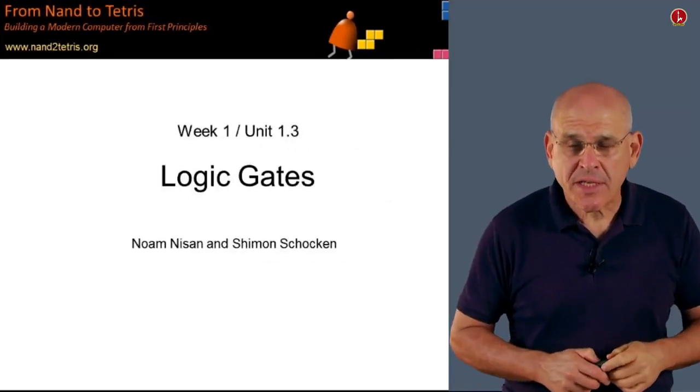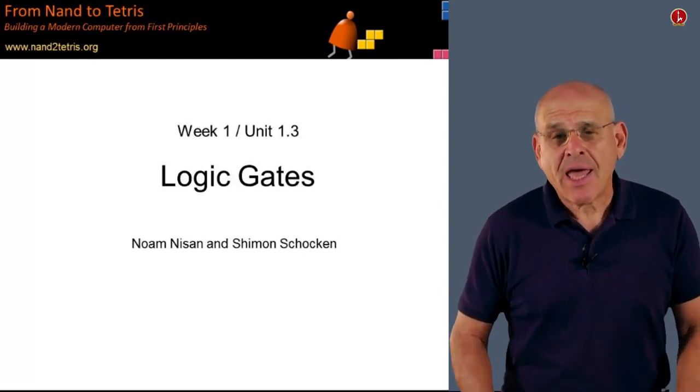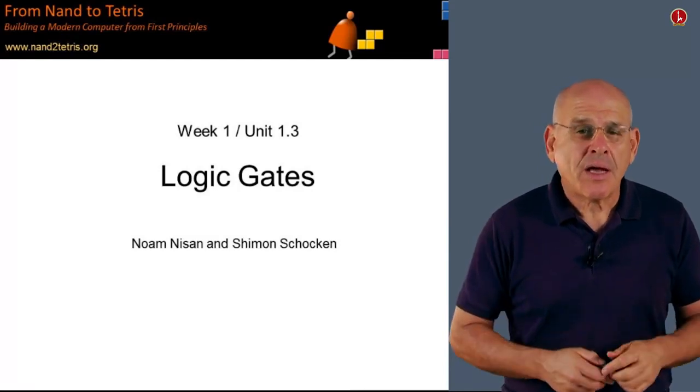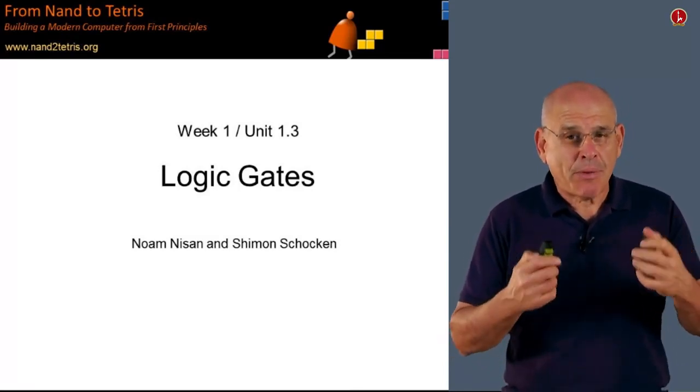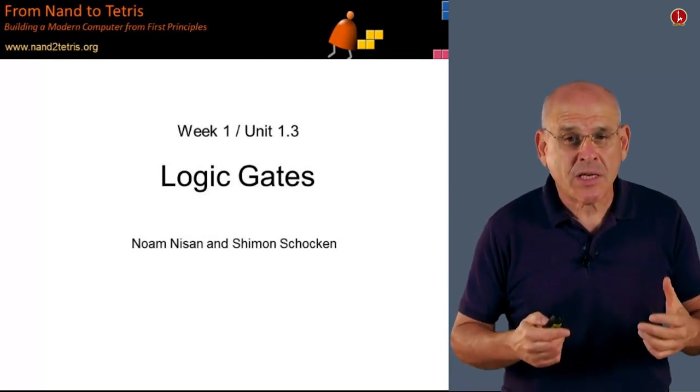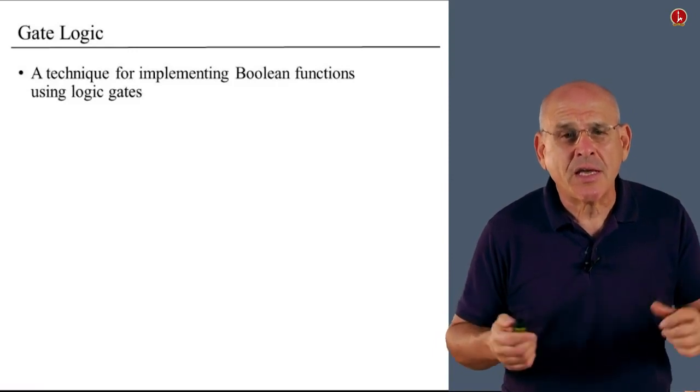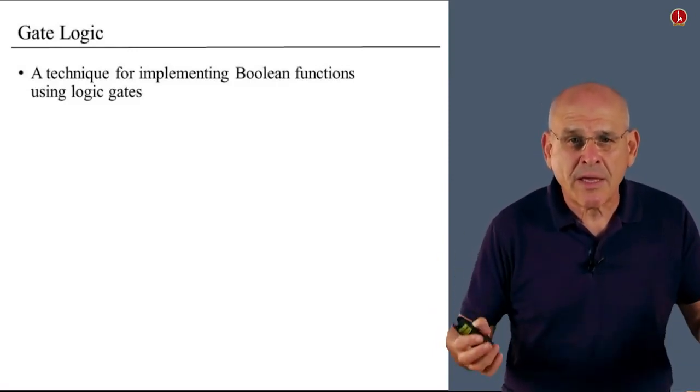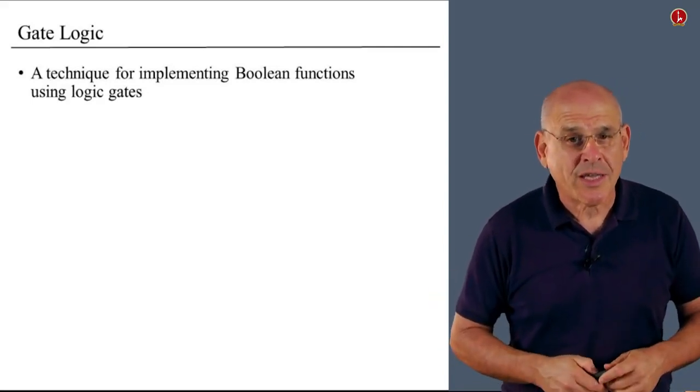In the previous two units in this week, we talked about Boolean functions, and most of this discussion has been theoretical. Starting with this unit, we are going to talk about how we actually implement these Boolean functions using hardware. In particular, we're going to talk about the general technique called gate logic, which is a technique for implementing Boolean functions using logic gates.